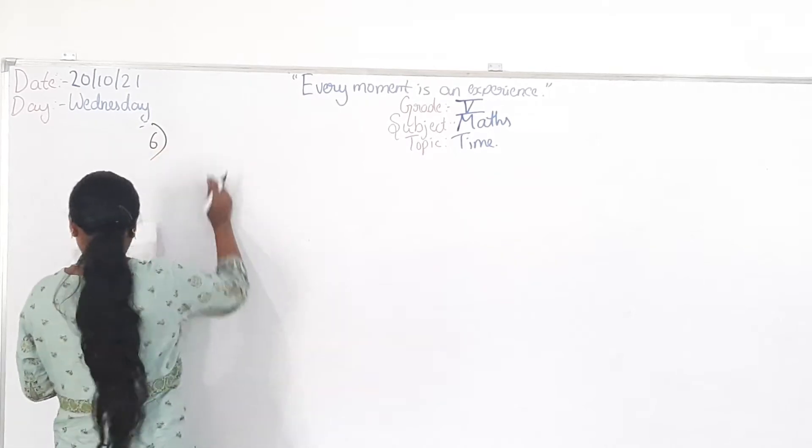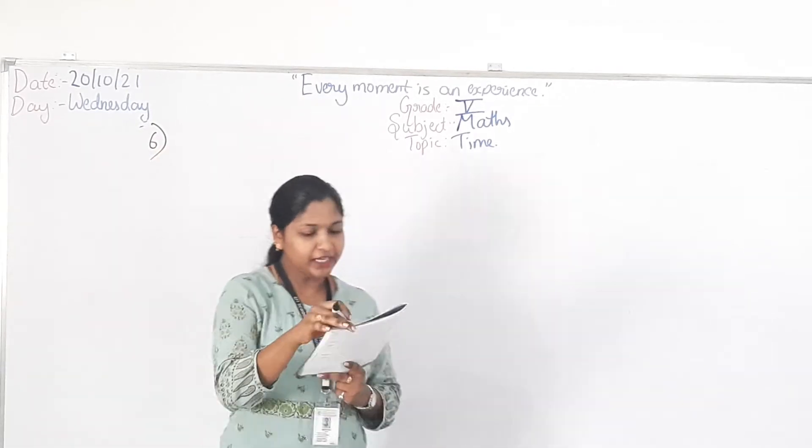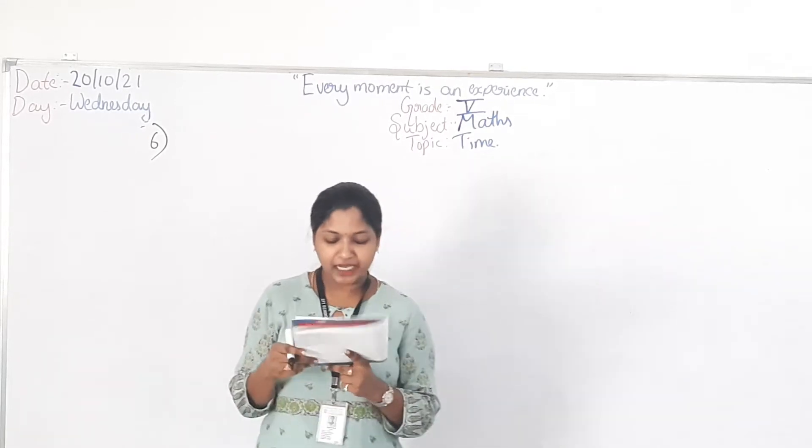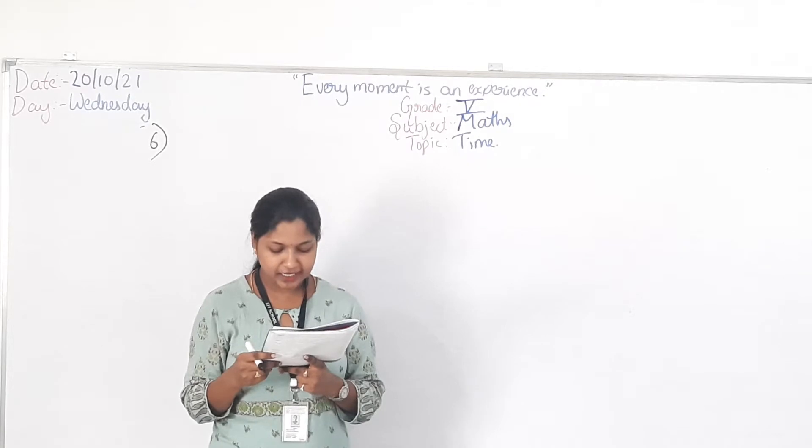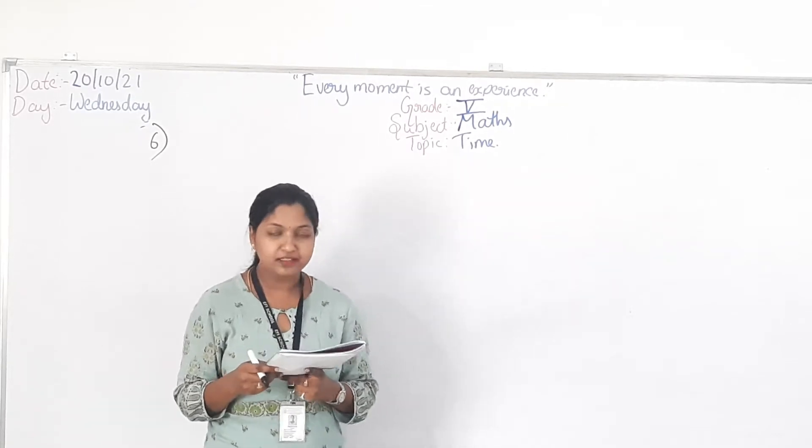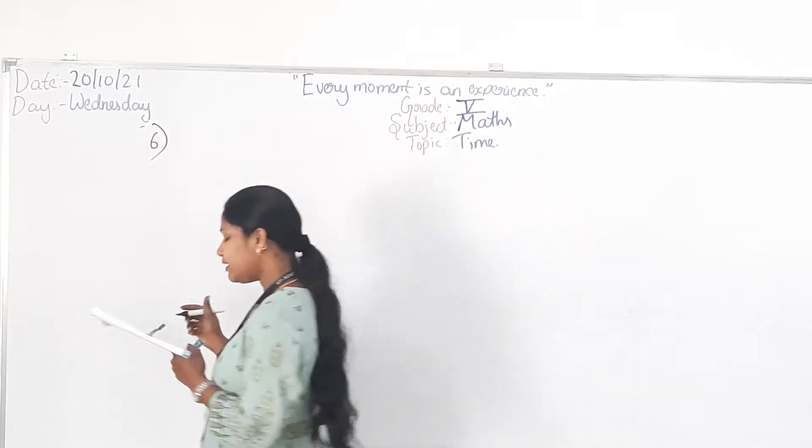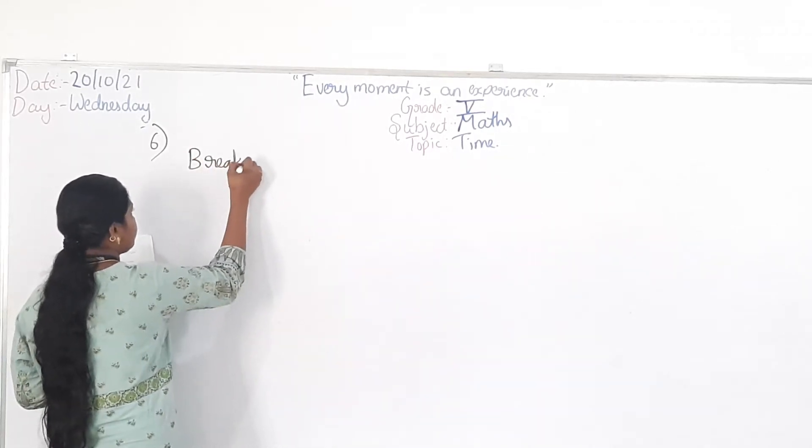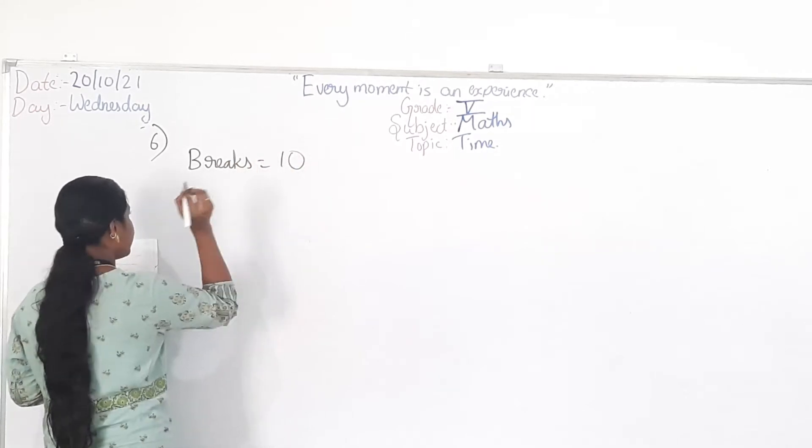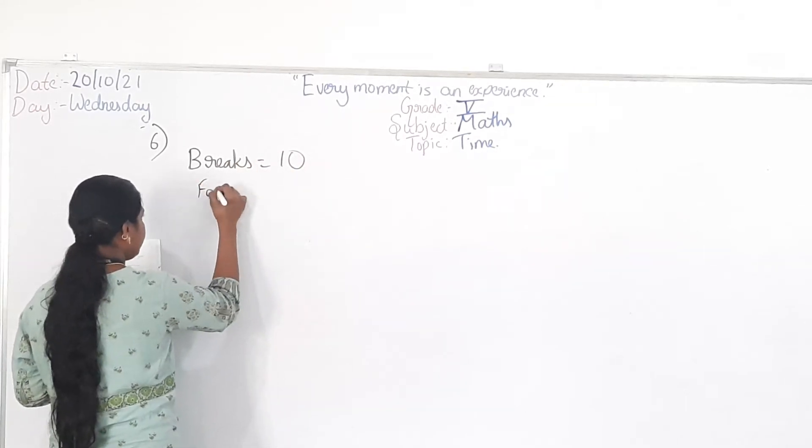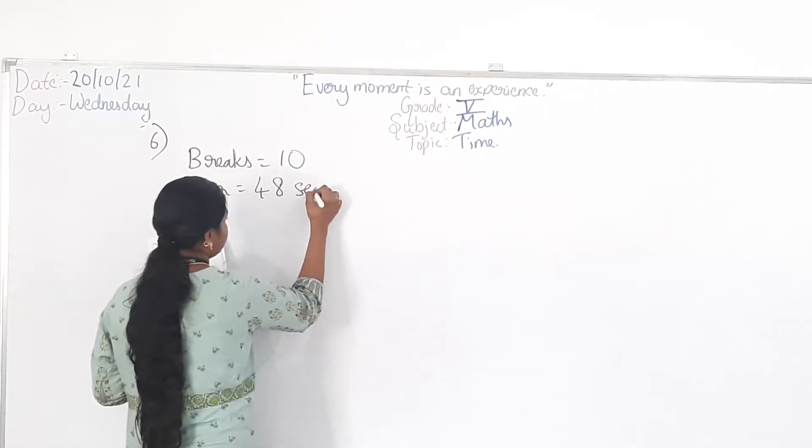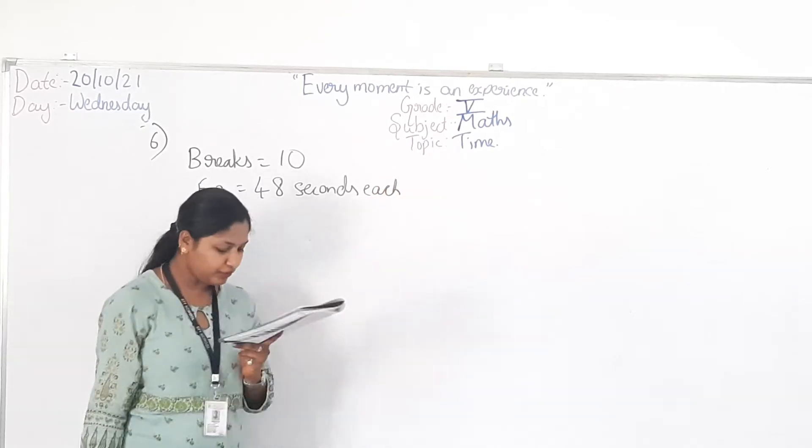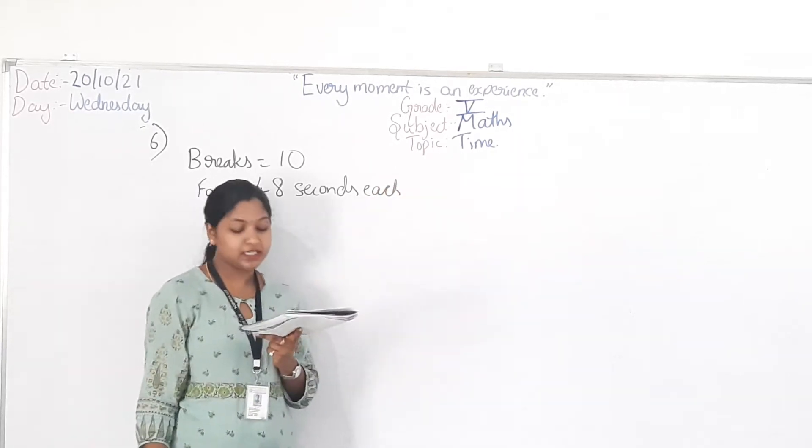Example 6. During a television program, there were 10 breaks for 48 seconds each. For how many minutes did the breaks last? So what is there? There were how many breaks? 10. So what is the seconds for? 48 seconds each.